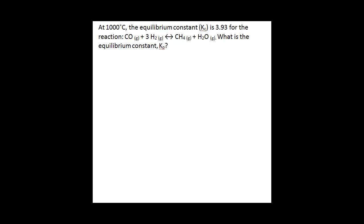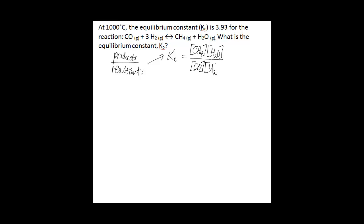Before we start, I'd like to talk about the general difference between Kc and Kp. In both cases, we're dealing with products over reactants at the equilibrium condition. But the difference is that Kc is equal to the concentration of the products over the concentration of the reactants, where the concentrations are in molarity. So in this case, Kc would be equal to the concentration of methane gas in moles per liter over the concentration of water in moles per liter, divided by the concentration of carbon monoxide times the concentration of hydrogen gas raised to the third. And all of those concentrations would be in moles per liter.